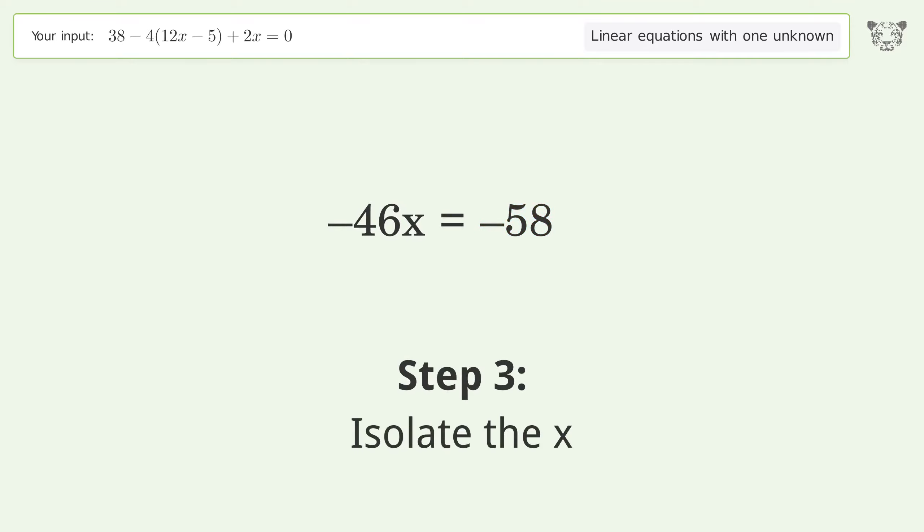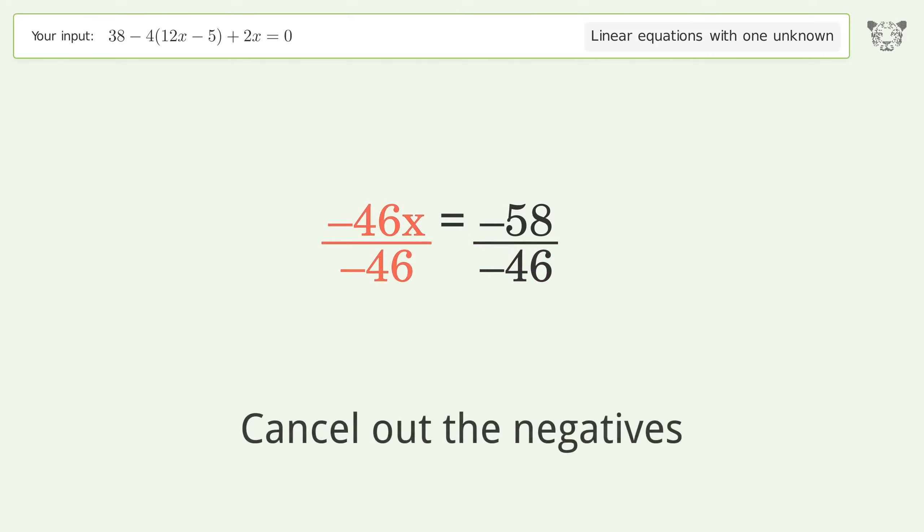Isolate the x. Divide both sides by negative 46. Cancel out the negatives.